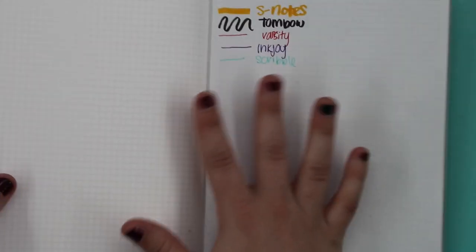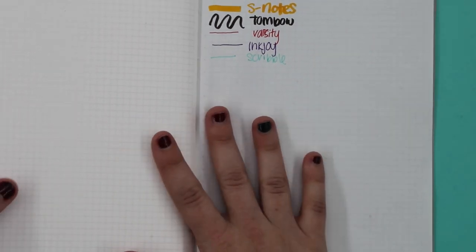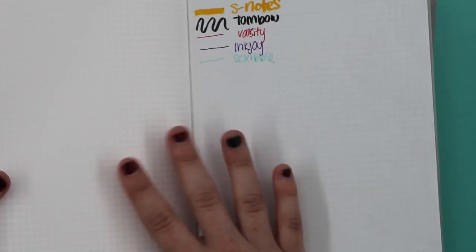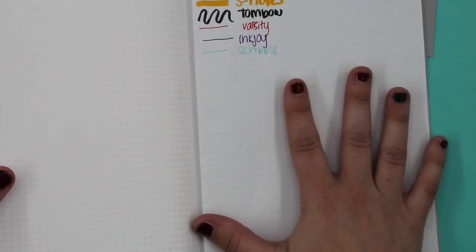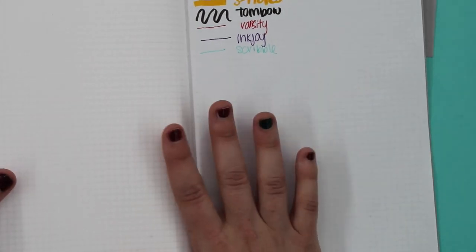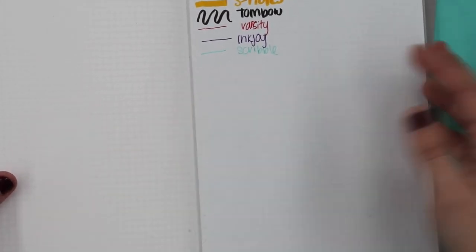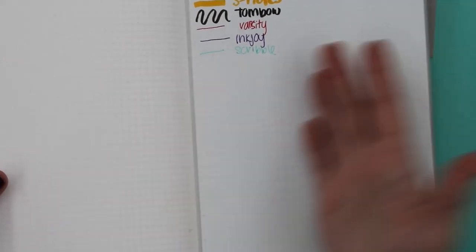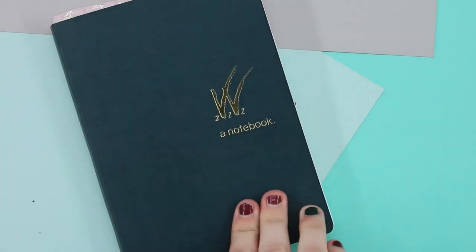So one thing about the Stalogy is there are a few shops that you could get this from. So there are different Japanese stores, such as JetPens, and you can also find it on Amazon as well, but there is limited stock. So that is the Stalogy. So let's move on to our next option, which is the Wonderland 222.